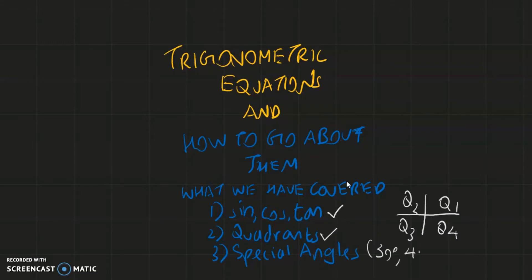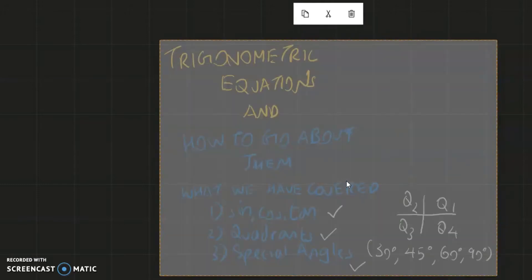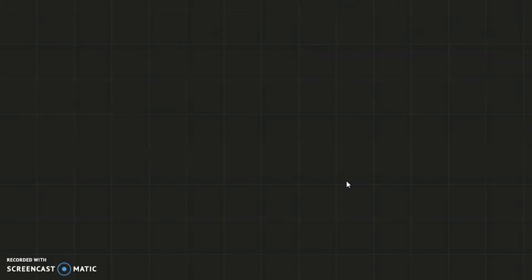We also covered the special angles: 30 degrees, 45 degrees, 60 degrees, and in a way 90 degrees. Since we have covered all this, it's time to dive into the next part — exactly how do we apply the system of quadrants, the definitions of sine, cosine, and tangent, and the special angles to solve irregular angles without the use of a calculator.